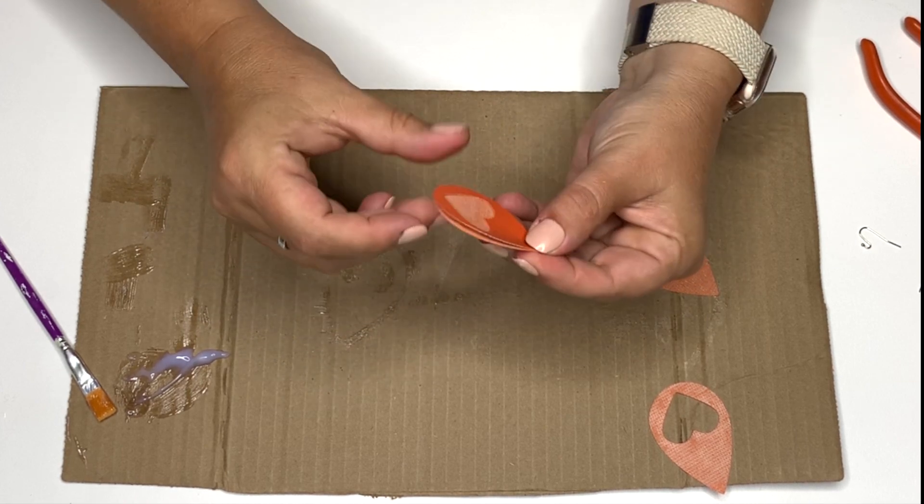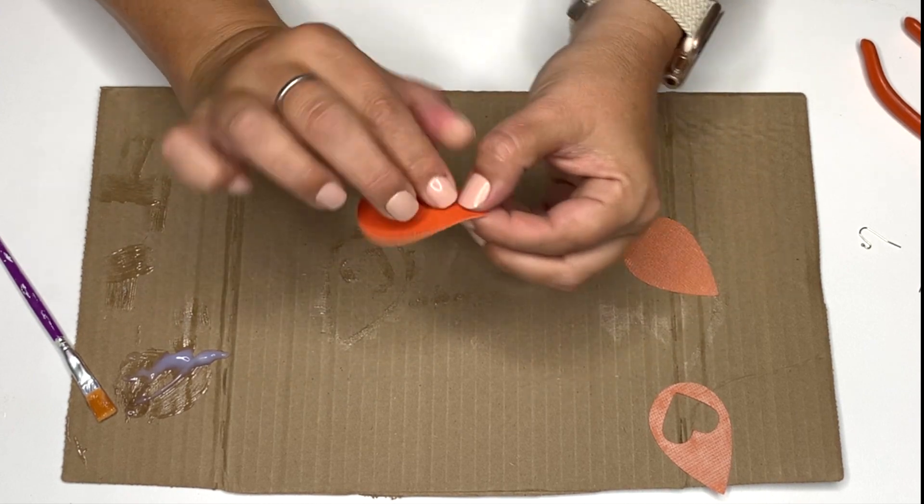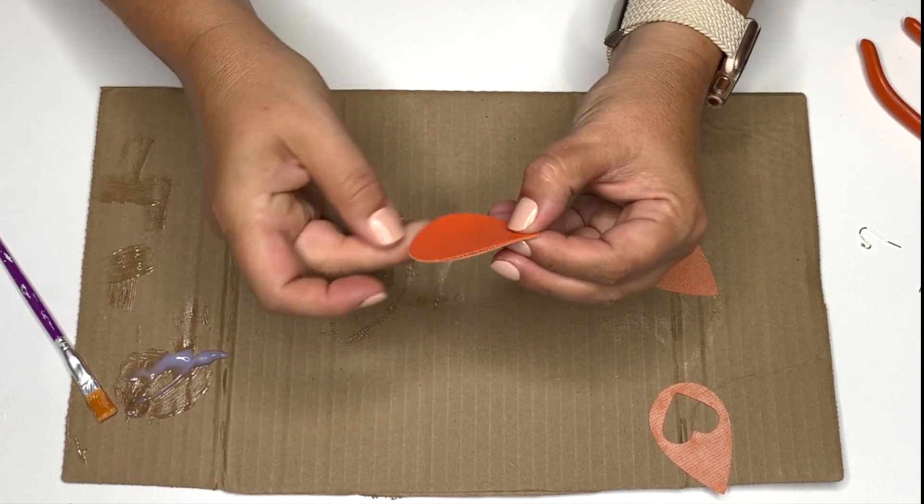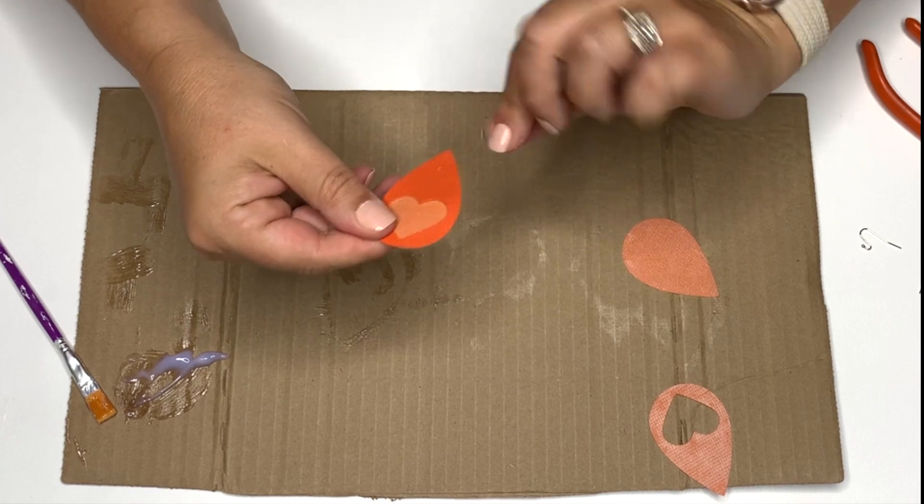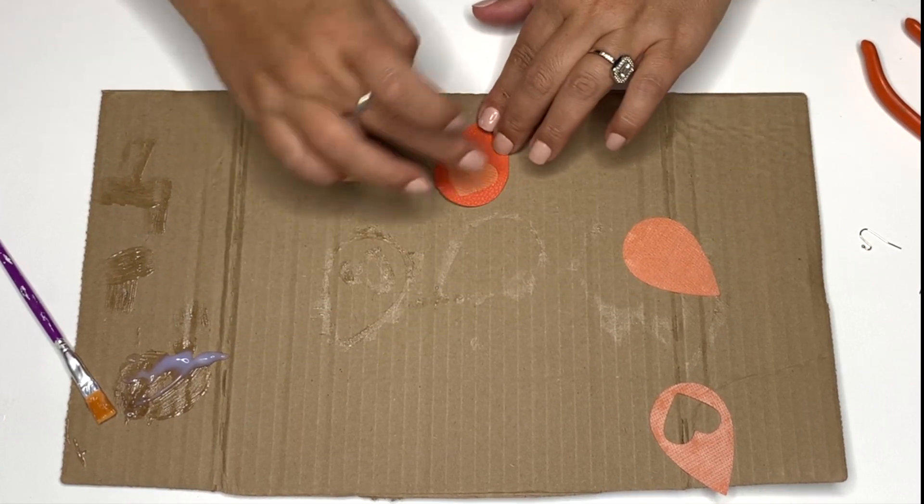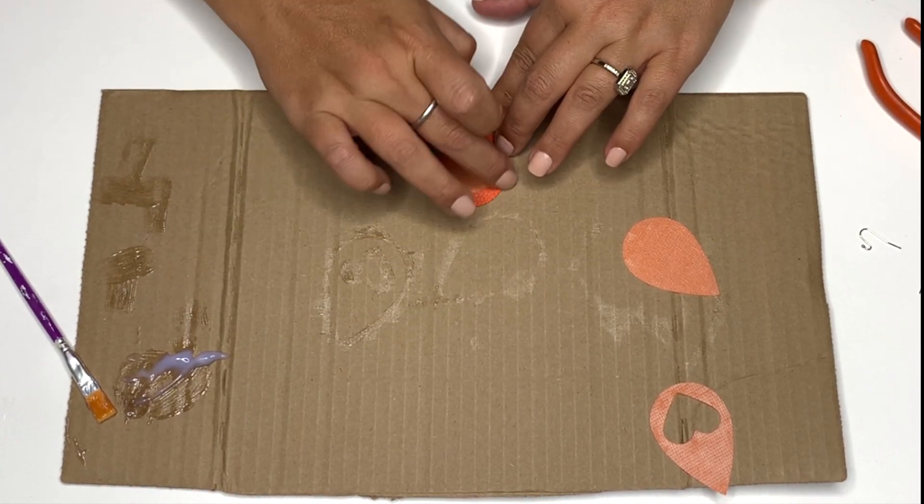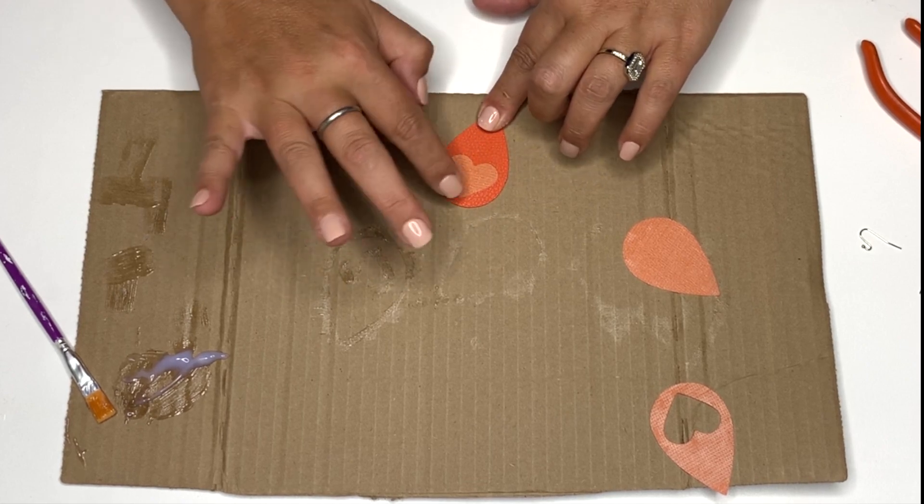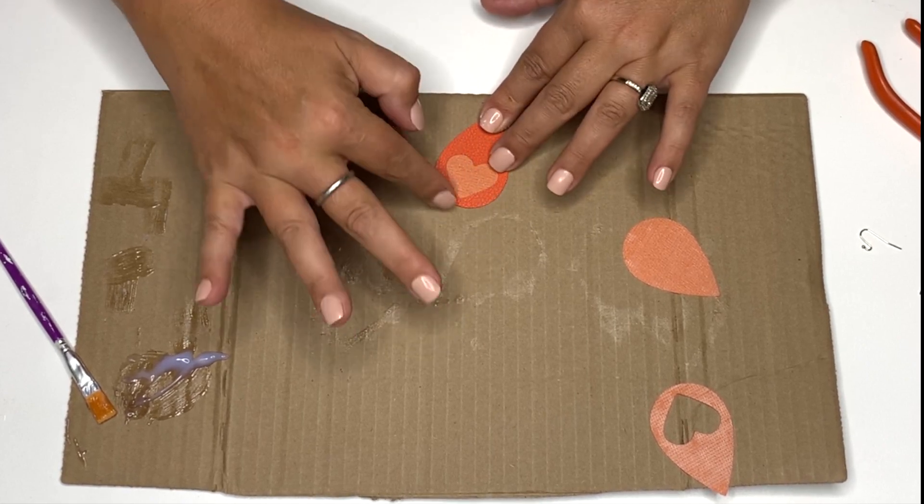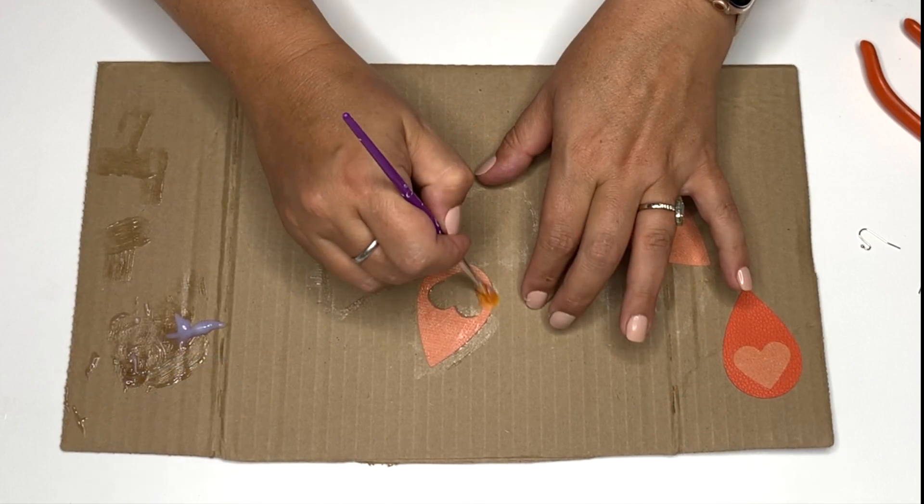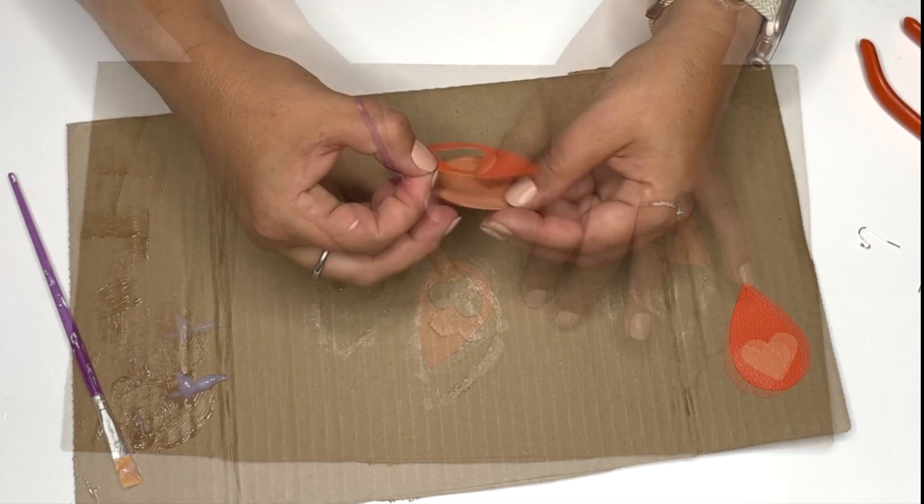You can also put vinyl on the inside of that heart in a contrasting color if you'd like but I kind of like how the back of that looks. So you have a good bit of time with this glue. Do not worry about everything sticking in place immediately which is both good and bad. I'm just pressing it around all the way around. You can even run a brayer over it if you would like.